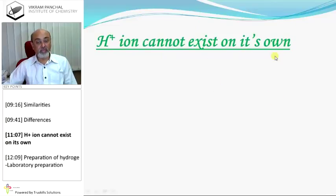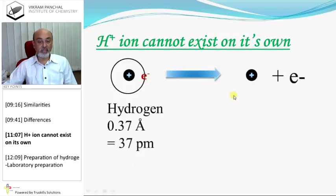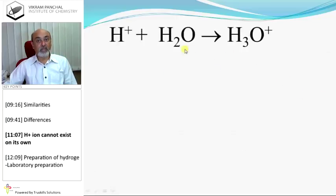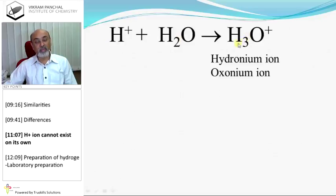H+ ion cannot exist on its own. Hydrogen has one nucleus and one electron. When you remove the electron from a hydrogen atom, only a proton is left. The radius of hydrogen is 37 picometers, while the radius of H+ ion is only 1.5×10⁻³ picometers, so it cannot have free existence. H+ combines with H2O to form H3O+ (hydronium ion or oxonium ion). In aqueous solution, when any acid releases H+, it will join with H2O to form H3O+.